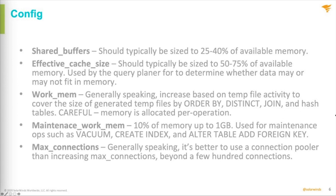The next config item is effective cache size. This is related to making sure the system is taking advantage of the memory your server has. For effective cache size, we're going to target around 50% to 75% of the available memory on the server. Despite what the name implies, it's not going to allocate a cache or do any kind of memory allocation — what it's doing is telling the server's query planner how much memory it should expect to have available for managing the data it's storing and querying. The query planner will look at effective cache size and determine how much memory is available for pulling data in from indexes and tables, which impacts how the database plans and executes queries. If set too low, the server will assume it doesn't have a large memory buffer, changing the way it issues queries and sometimes making them a lot slower.